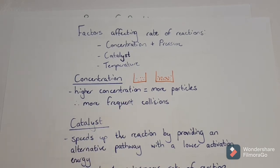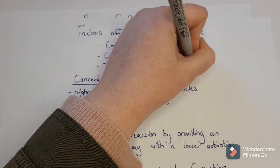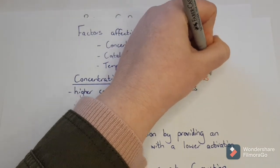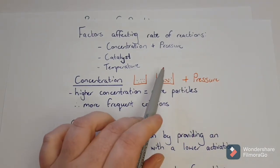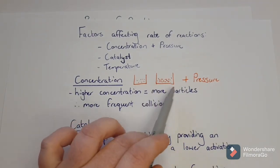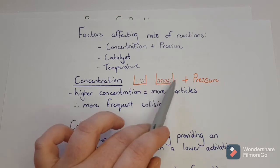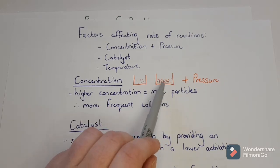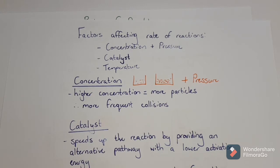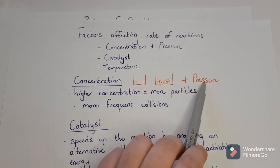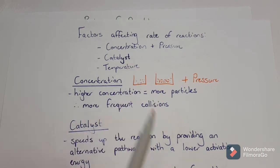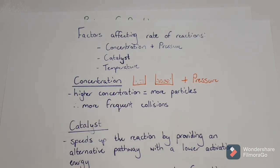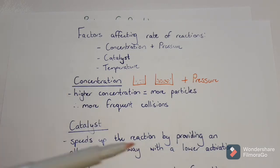Pressure works exactly the same way. If I decrease the volume of an area, it means I have more particles in there because I've increased the pressure, and then there are going to be more collisions. So an increase in pressure increases the rate of reaction; a decrease in pressure decreases the rate. Concentration and pressure are exactly the same in terms of their effect on rate of reaction.